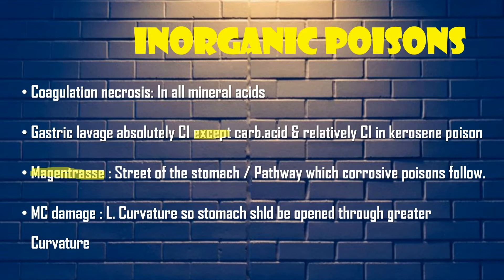Next, magenstrasse — also known as the 'street of the stomach' — is the pathway which the poisons follow after ingestion. After ingestion, the most common damage will be seen over the lesser curvature, so the stomach should be opened through the greater curvature to prevent more damage.